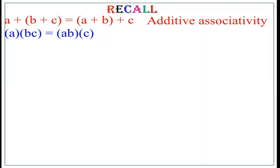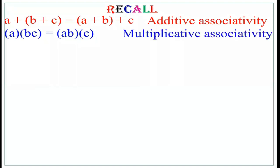With respect to multiplication, this becomes A into (B into C) equals (A into B) into C, known as multiplicative associativity. In general, in associativity, we simply change the bracket.